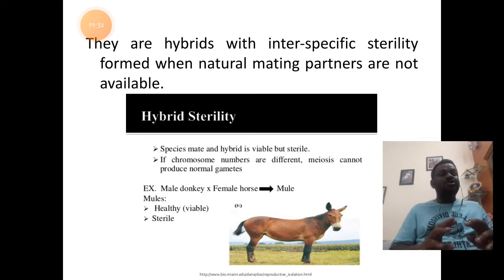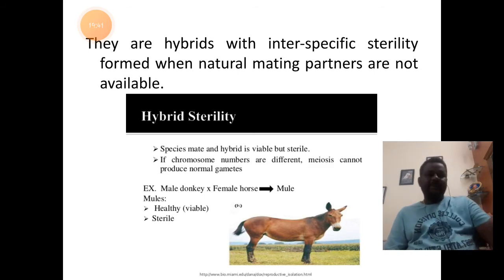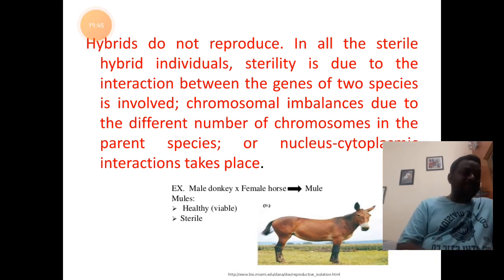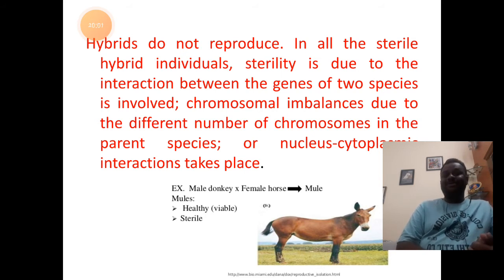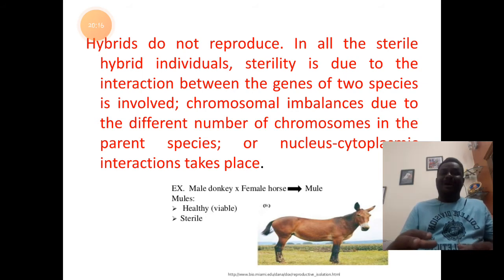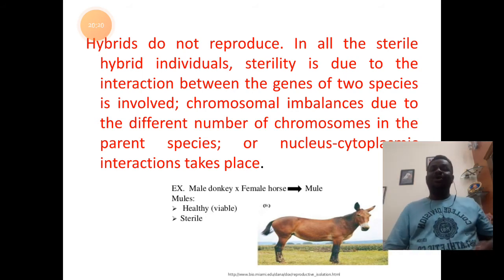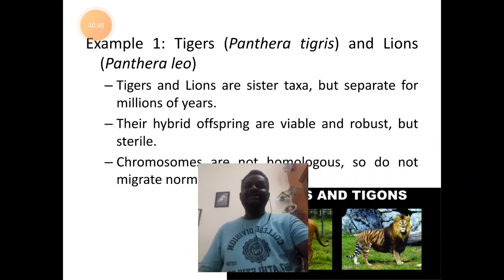Two closely related species of organisms undergo mating to form sterile hybrids. These sterile hybrids generally do not reproduce. In all sterile hybrid individuals, sterility is due to interactions of abnormal genes, chromosomal imbalances — chromosome number is different between them — and nucleus-cytoplasmic interactions are different in them. All these factors bring about the hybrid remaining in a state of sterile condition.